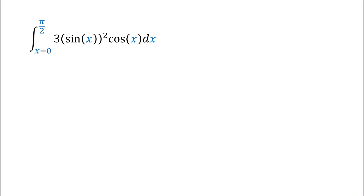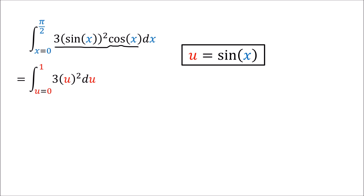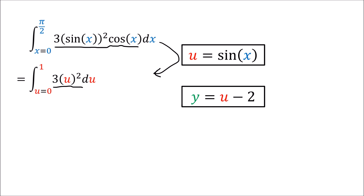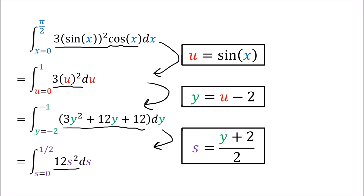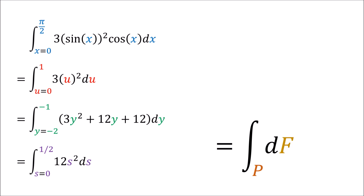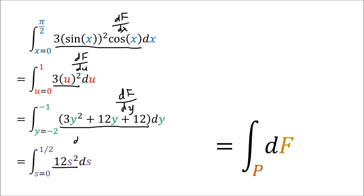The same applies to covector fields and integrals. We can have an integral with a covector field, change variables, and get another expression that looks totally different — and change variables again and again. But all of these expressions are describing the same covector field df; we've just expanded it using different variables and gotten different components. So df doesn't depend on any coordinate system.